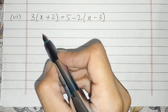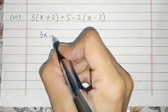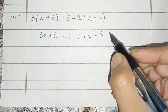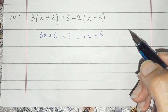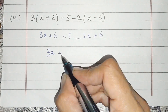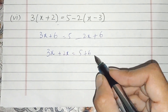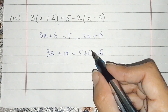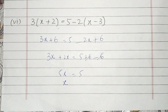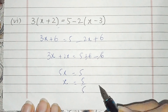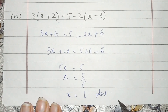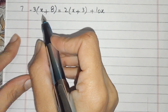Now, students, 6th part. We multiply to open the bracket. This is 3x plus 6. Then minus 2x minus 2x — minus minus becomes plus 6. Position changes: minus 2x goes to the x side. We add: 3x plus 2x and 5 plus 6 comes to the other side minus. It cancels and we get 5x = 5. We divide 5 by 5, x is equal to 1. This is the answer of the 6th part.